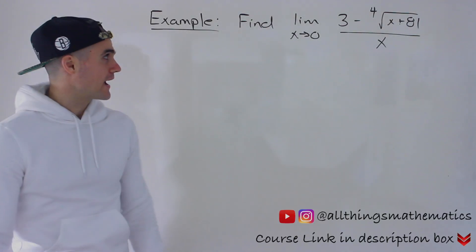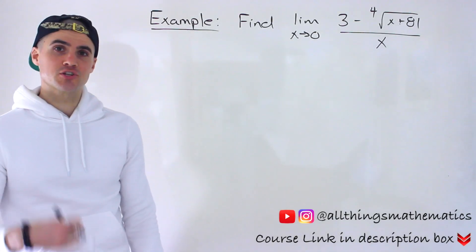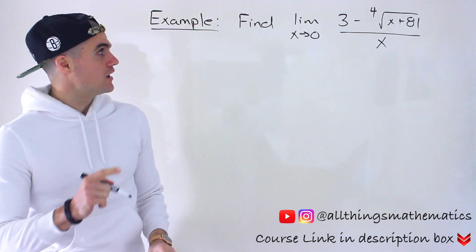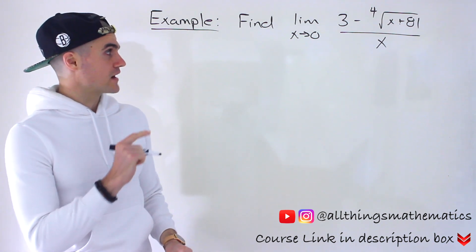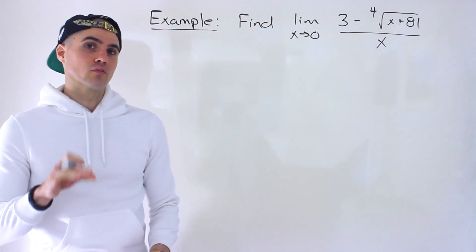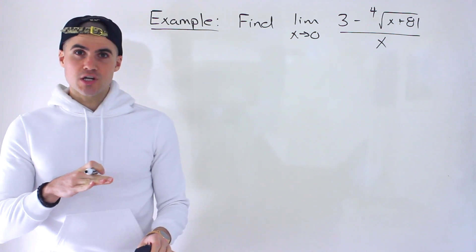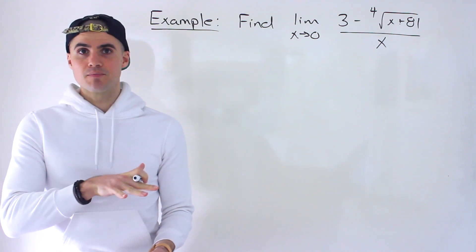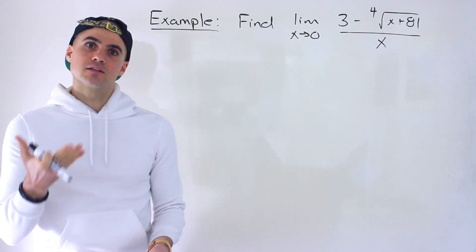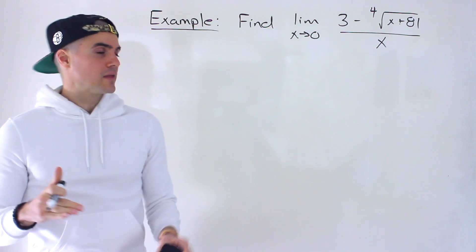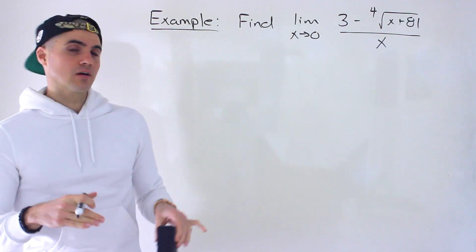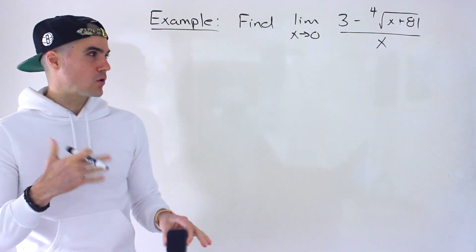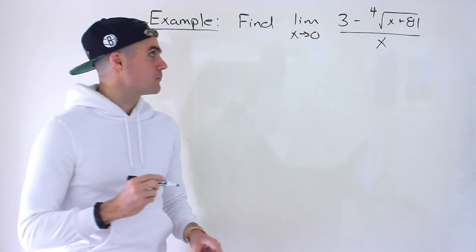What's up everyone? Patrick here. Welcome back — moving on to another limit question, another change of variable limit. We've got to find the limit as x approaches 0 of 3 minus the 4th root of x plus 81, all over x. We've gone through a bunch of change of variable limits already. I recommend going to the website where you can find the link in the description, because I go through everything in order. So I'm going to go through this one at a quicker pace.